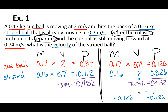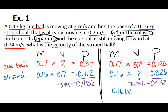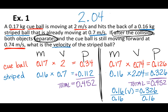Now we have the striped ball's momentum. We can solve for the velocity: 0.16 times V equals 0.326. Dividing by 0.16 gives a velocity of 2.04. The final answer for this problem is 2.04 meters per second.